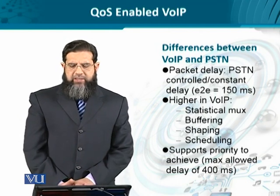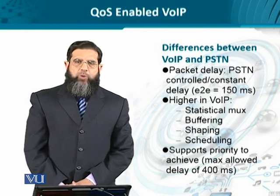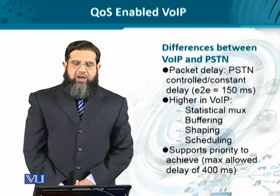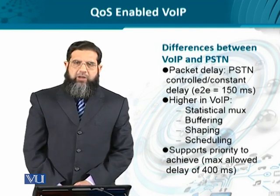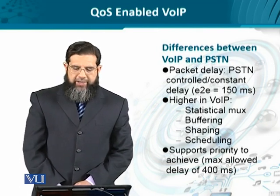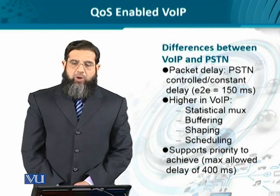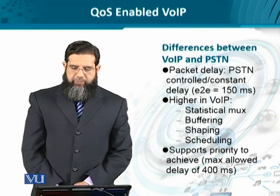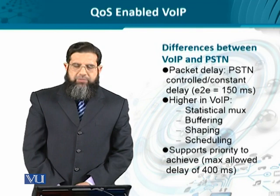Regarding delay: in circuit-switched PSTN networks, the end-to-end call establishment delay — including switching delay and signaling delay — does not normally exceed 150 milliseconds, which is acceptable for the human ear. But in IP-based NGNs, there are many processes occurring with packetized voice, such as multiplexing, buffering, traffic shaping in resource-starved networks, and priority enqueuing and scheduling mechanisms. All these incur delays that add up to an extent where audio quality suffers in both delay and delay variance.